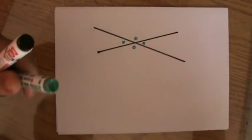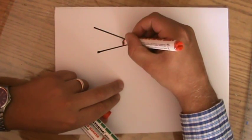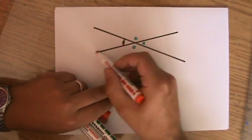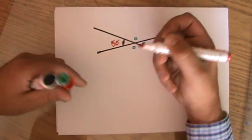But I'm just going to show you why. Why are they equal? Let's say this angle is, it's an acute angle, so what is that roughly, 50 degrees? Let's say it's 50 degrees.